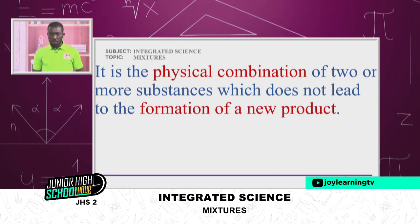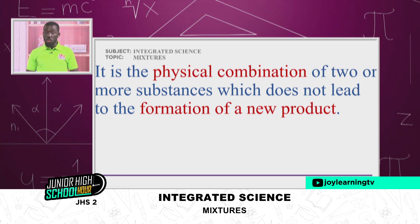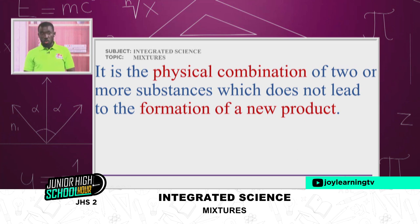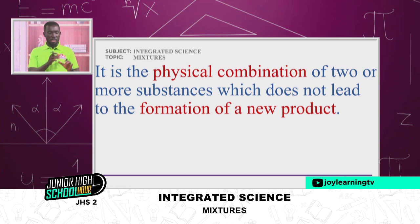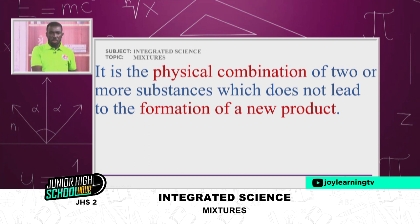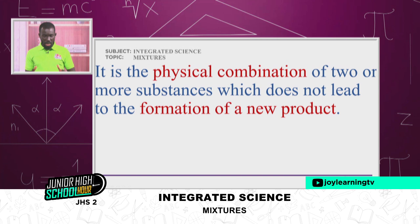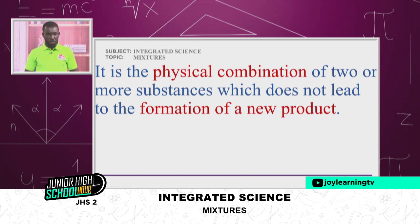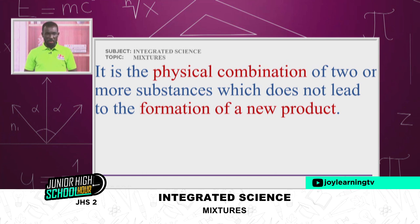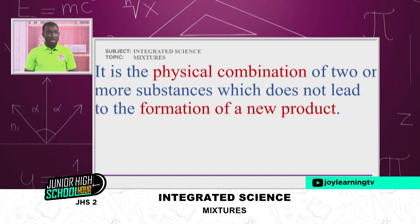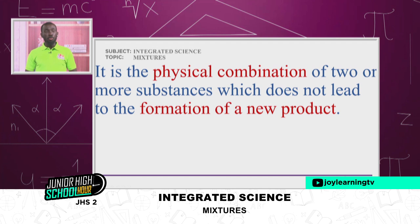A mixture is a physical combination of two or more substances which does not lead to the formation of a new product. So whenever you talk about a mixture, it means that something has been brought or combined with something else. Always have it in mind that mixtures do not produce new things, because they are always in their physical state — meaning there is no chemical bonding or chemical property being produced.